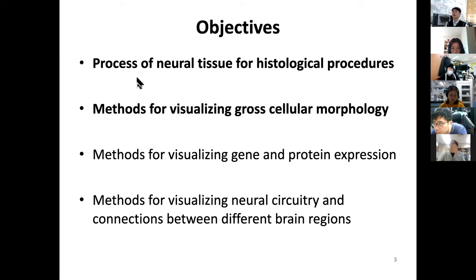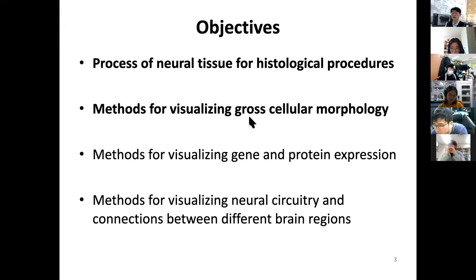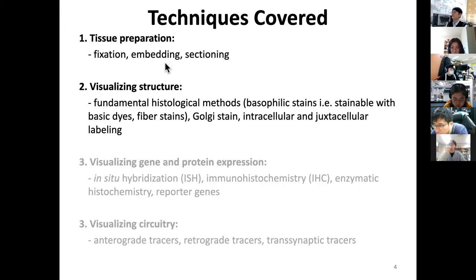So what's our goal? We want to study the process of neural tissue for histological procedures. Some parts are common with conventional biology, but we are more specific in the way we approach neuronal structures. We'll talk about methods for visualizing gross cellular morphology and methods for visualizing gene and protein expression. The techniques we'll cover include tissue preparation, fixation, embedding, and sectioning.